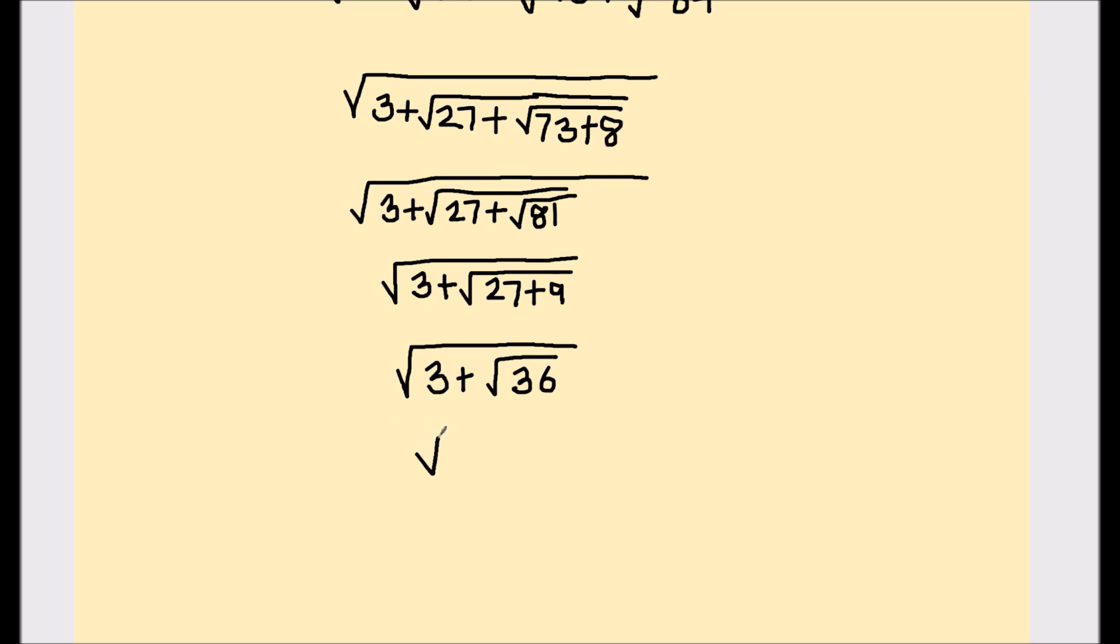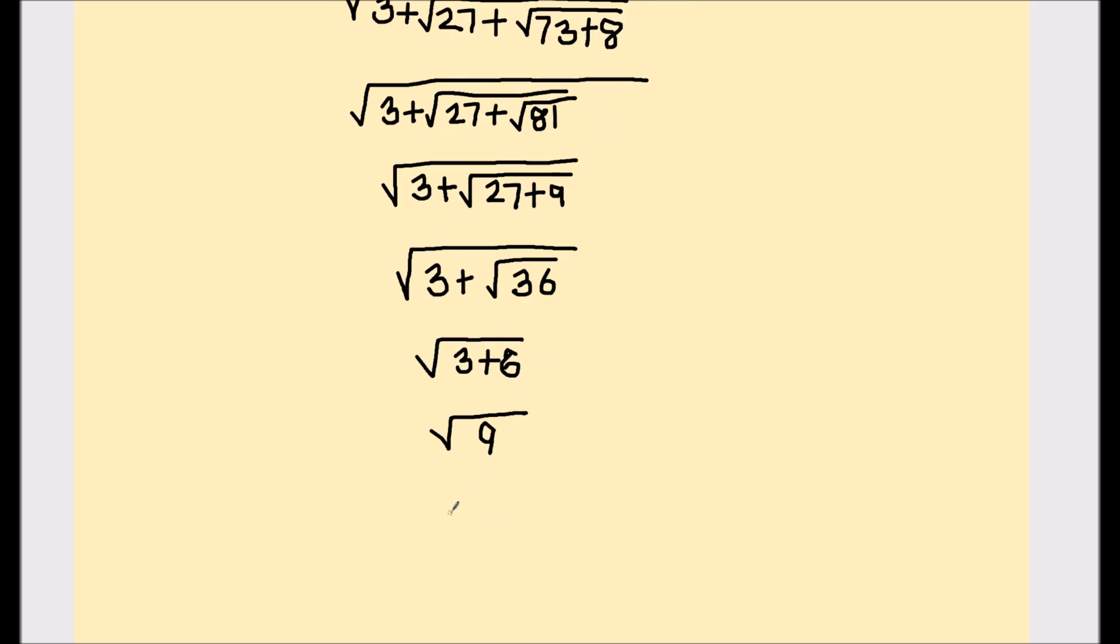The square root of 36 is 6, and 3 plus 6 equals 9, so now we are left with √9. The square root of 9 is 3, so our answer is 3.